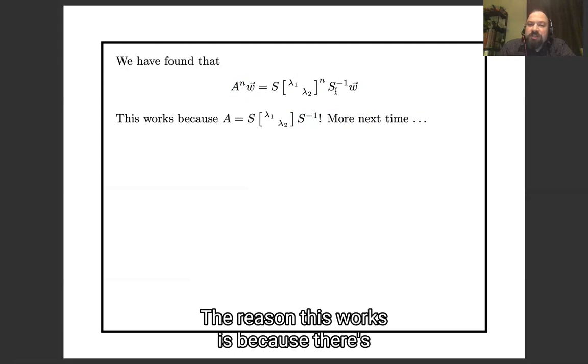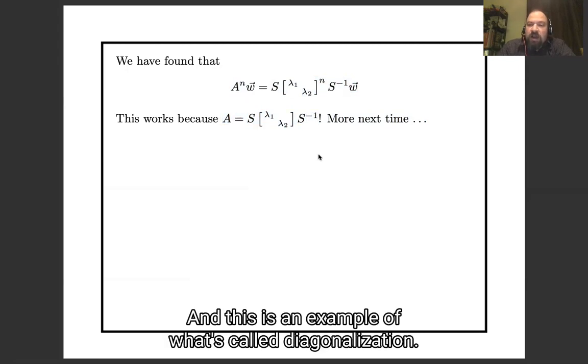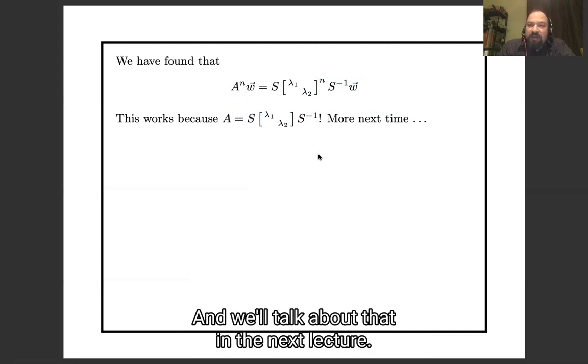The reason this works is because there's a deeper identity hiding here, which is that A is S times the diagonal matrix times S⁻¹. And this is an example of what's called diagonalization, and we'll talk about that in the next lecture.